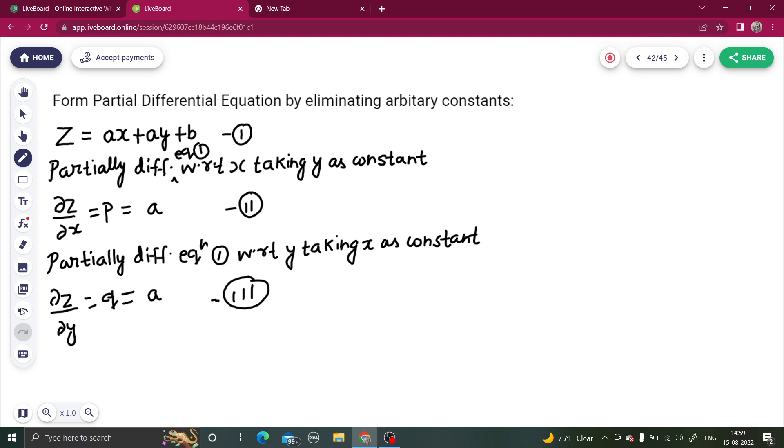Let's see. P equals to a and q equals to a. So from equations two and three, we can say that p equals to q, because p and q both are equal to a, so they must be equal. Simple mathematics.